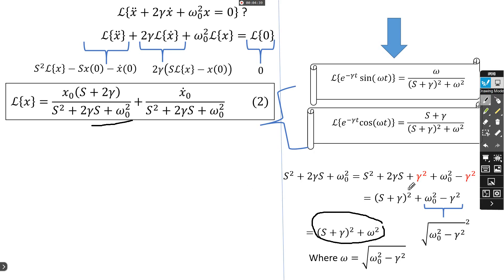For that, we need γ² minus γ² in order to get this expression, where ω is square root of ω₀² minus γ².